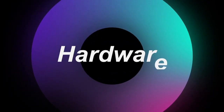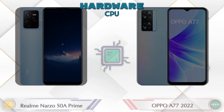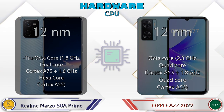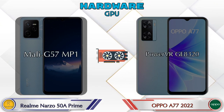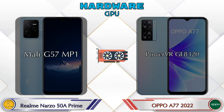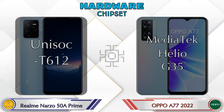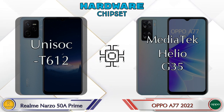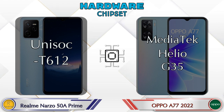First we talk about the most important part of the phone: hardware. Looking at the CPU first, then GPU — the 50A Prime has Mali G57 MP1 and the A77 2022 has PowerVR GE8320. Talking about the chipset, the 50A Prime has Unisoc T612 and the A77 2022 has MediaTek Helio G35.